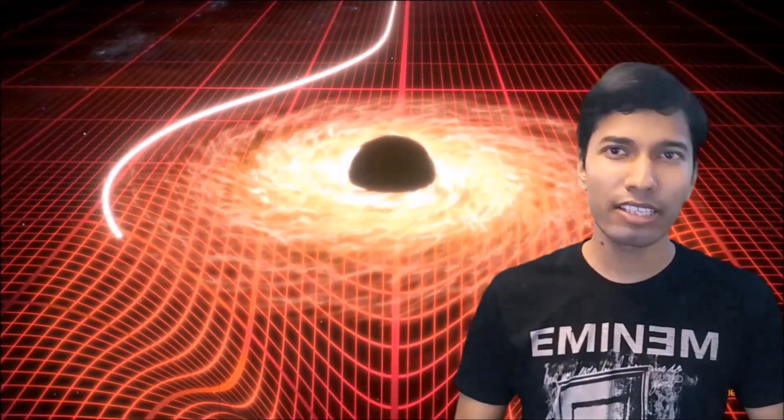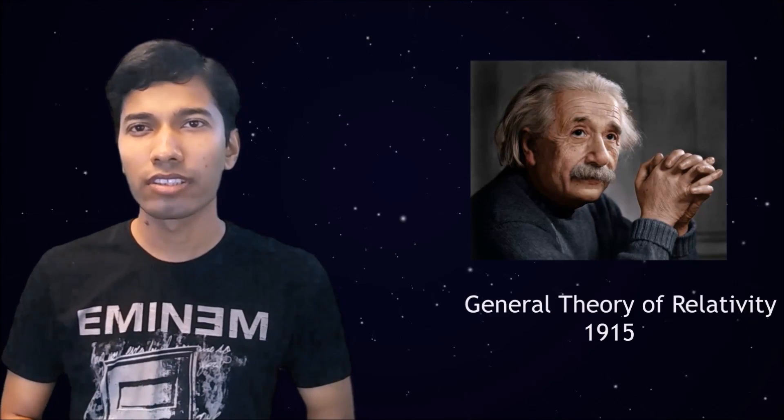Unlike Newton's gravity, general theory of relativity does not describe gravity using a single equation. Instead, it describes gravity using a set of ten equations, which Einstein called the field equations. Einstein proposed his theory of gravity in 1915, and just after a few months, German physicist Karl Schwarzschild found a solution of that theory.